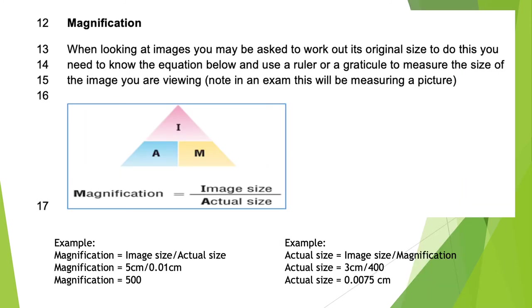When looking at images, you may be asked to work out the original size, and to do that you need this equation: magnification equals image size over actual size. Using the triangle — if you're looking for magnification, cover the M and you're left with I over A, so magnification equals image size over actual size. If you don't know the image size, cover the I and you're left with A and M side by side, so image size equals actual size multiplied by magnification.